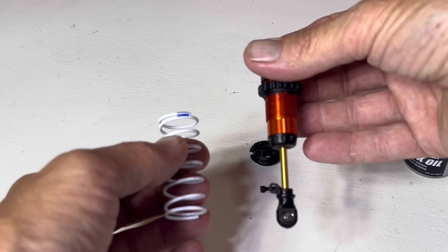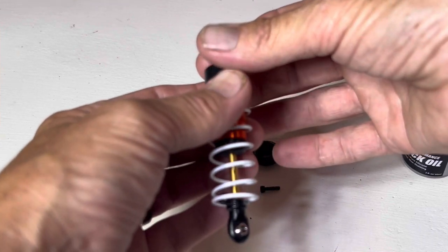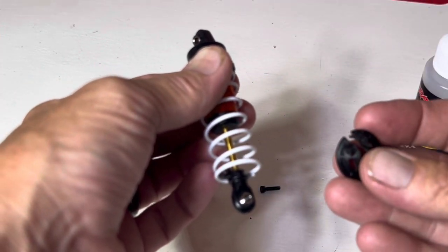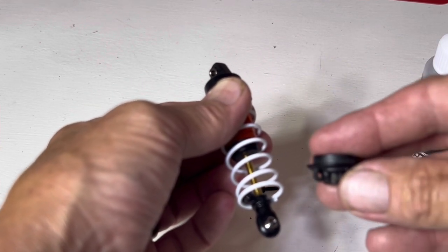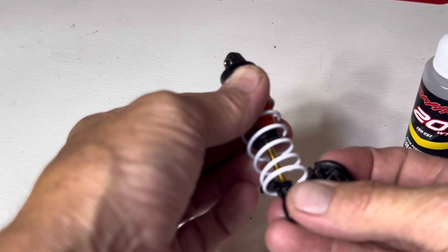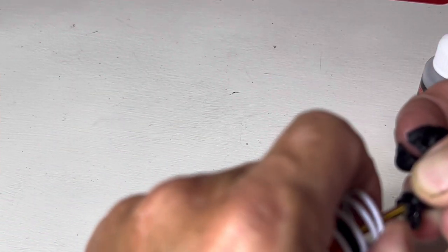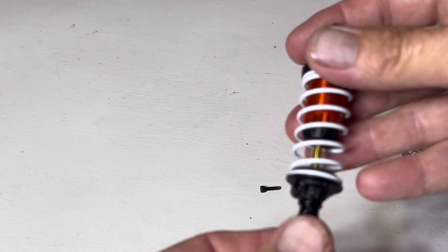So the next thing you can do once you've got this shock all filled up and ready to go, take your spring, slide it back in place. Then you'll be able to take this retainer, once again holding up on this spring, you'll be able to slide it back in place, making sure that the holes line up so you can get your little screw back in.